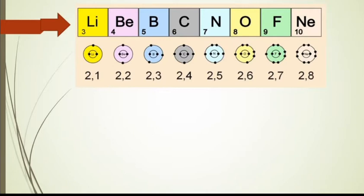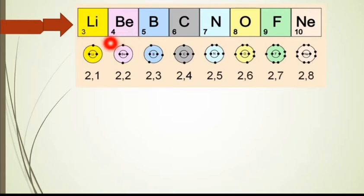यह आपके पास different elements हैं - Li lithium, Be beryllium, B boron, C carbon, N nitrogen, O oxygen, F fluorine, Ne neon। और इनके lower position पे जो numbers लिखे हैं, यह इनके atomic numbers हैं। Atomic number होता है किसी भी element का, वो उसकी position बताता है कि periodic table में वो किस position पे present है। Like Li lithium का atomic number 3 है, तो यह position number 3 पे present है। Beryllium का atomic number 4, boron 5th, carbon 6, nitrogen 7, oxygen 8, fluorine 9 और neon 10th position पे है।